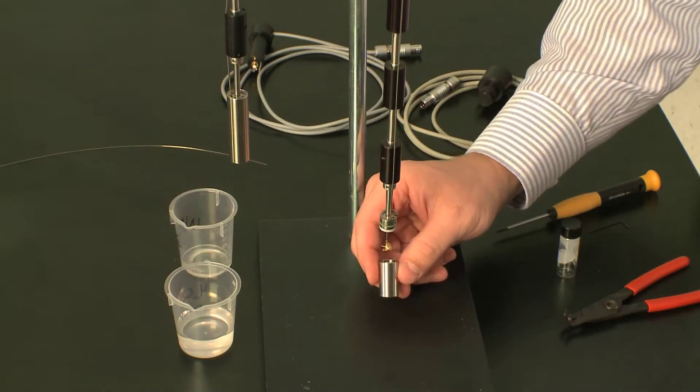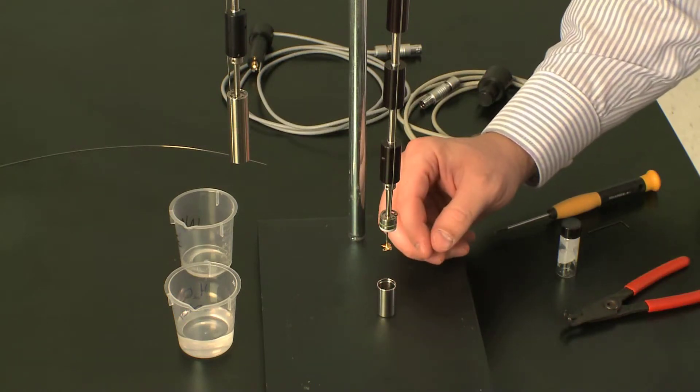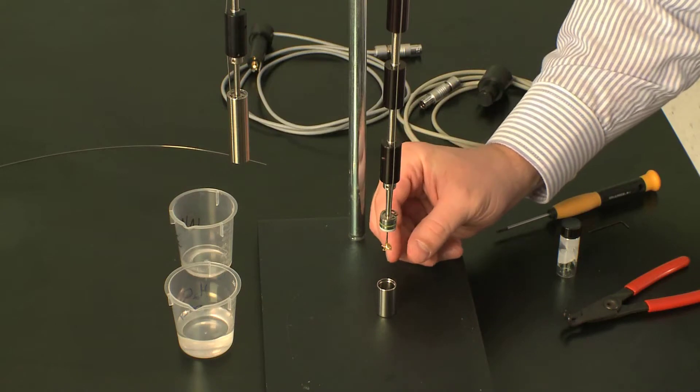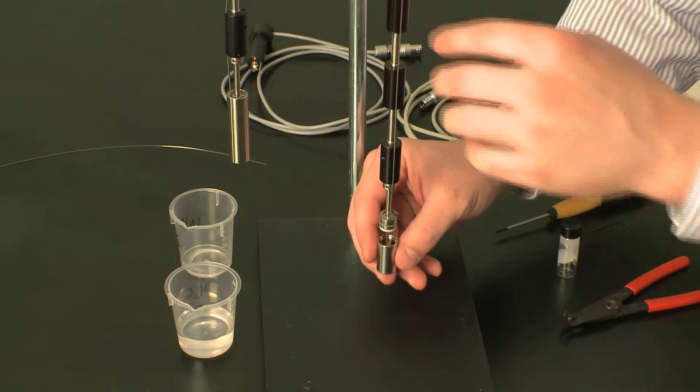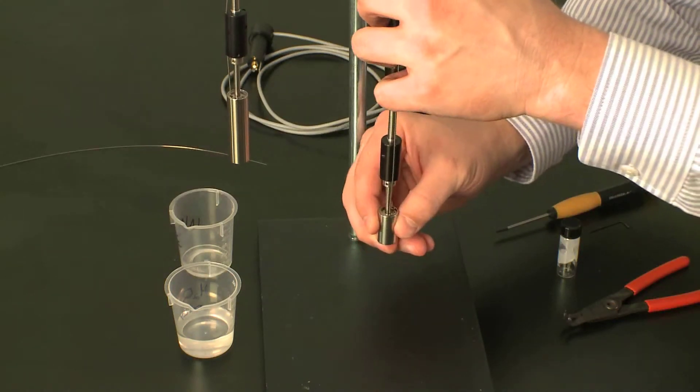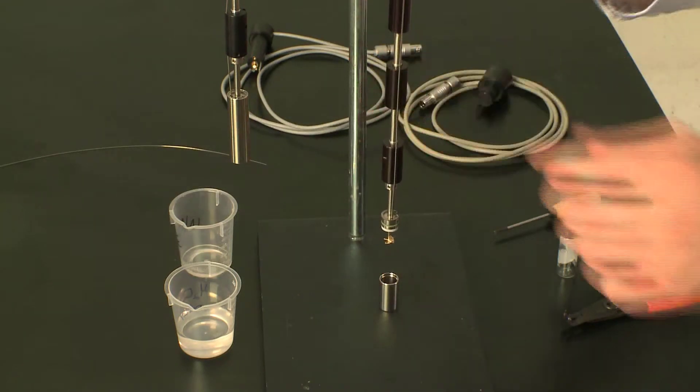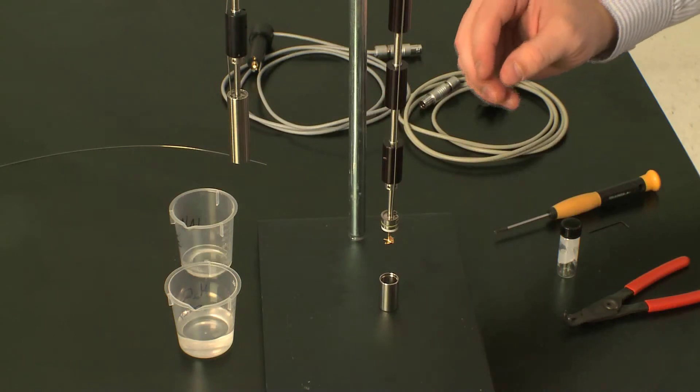Here I'm using a 1 milliliter ampule and the 1 milliliter gold propeller. I've placed the gold propeller on the central shaft. I'm going to put the ampule in place to push the stirrer up. Now I know the stirrer would touch exactly the bottom of the ampule.